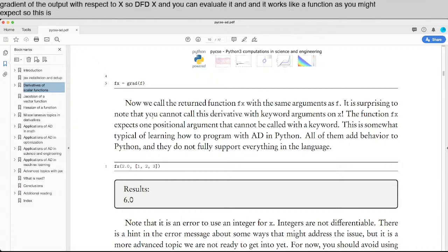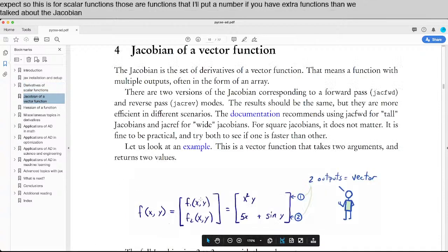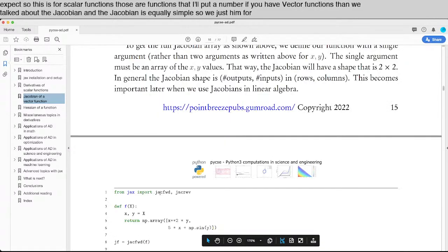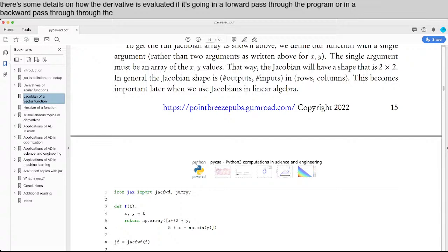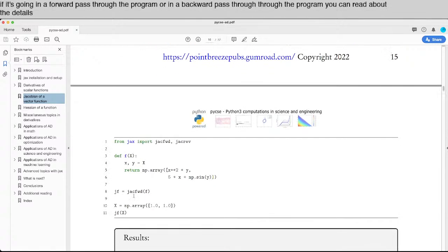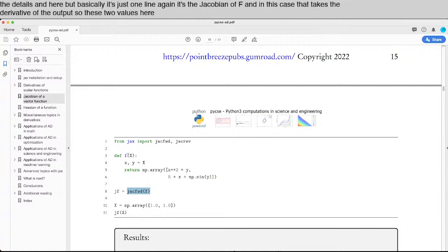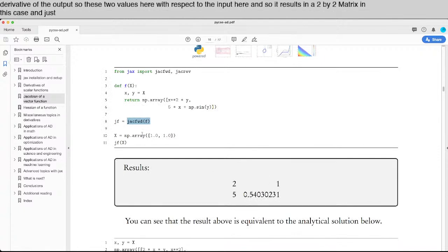So this is for scalar functions, those are functions that output a number. If you have vector functions, then we talk about the Jacobian, and the Jacobian is equally simple. So we just import either the forward or reverse Jacobian. There's some details on how the derivative is evaluated, if it's going in a forward pass through the program, or in a backward pass through the program. You can read about the details in here. But basically, it's just one line. Again, it's the Jacobian of f. And in this case, it takes the derivative of the output, so these two values here, with respect to the input here. And so it results in a two by two matrix, in this case, in just a single line. It's very convenient.